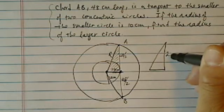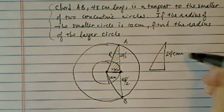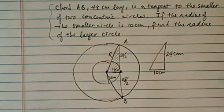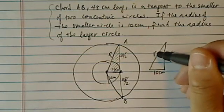Okay, so this one is 24 centimeters, it's half, and we're given the radius for the small one is 10 centimeters. We're looking for R.